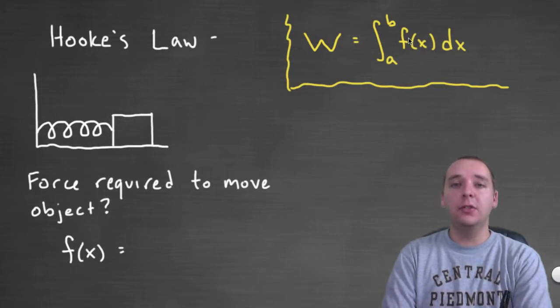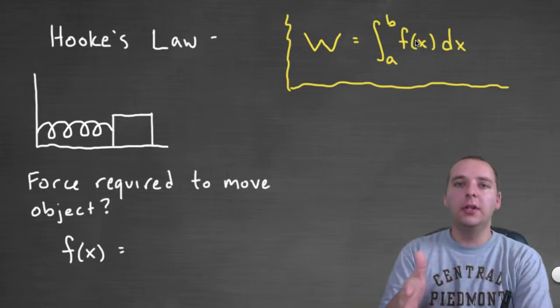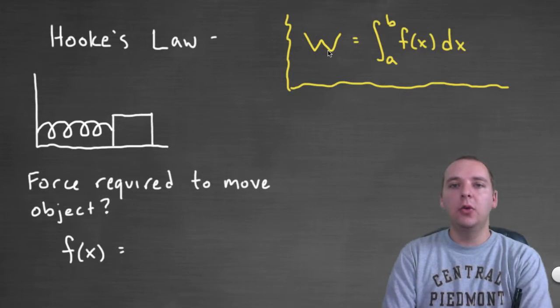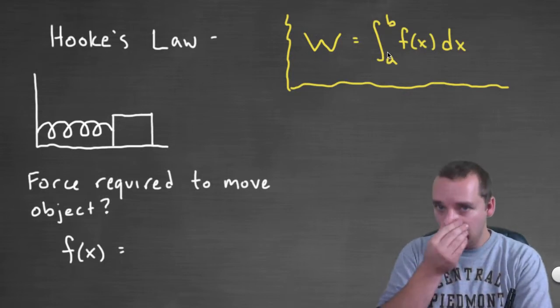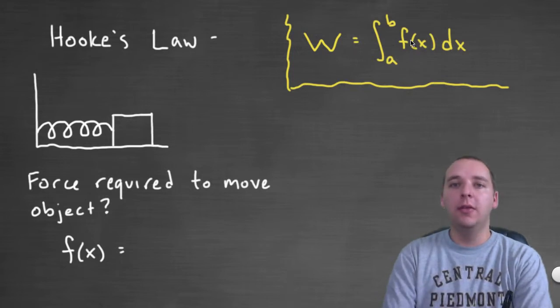And so the idea is if a force varies over a distance, then we can get the total work done by doing a definite integral over that distance where we integrate the force function that's constantly changing. Now, we didn't really get into it at the time, but what would be some examples of some reasons a force might change over a given distance?